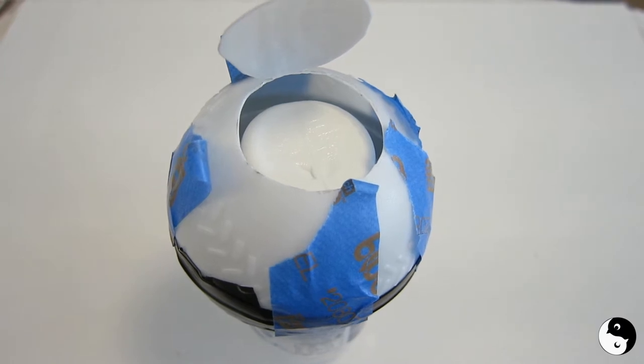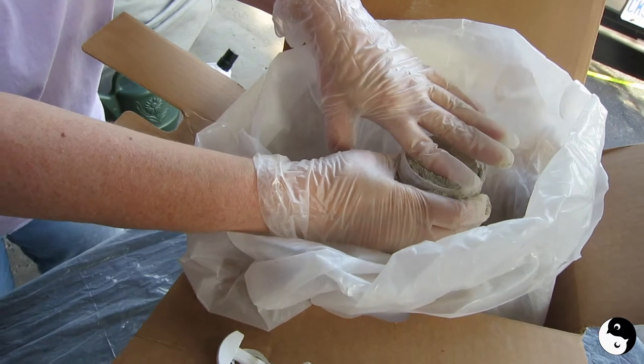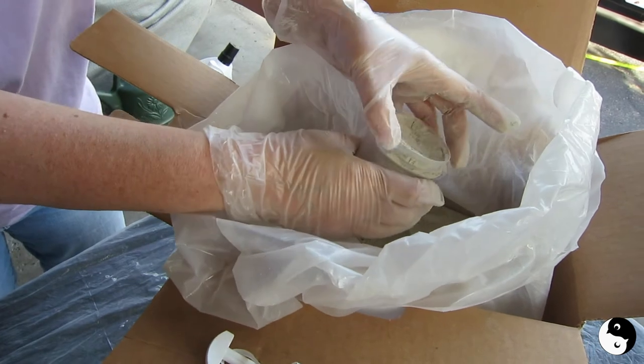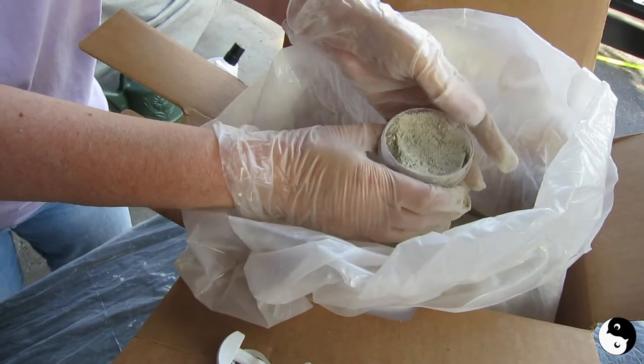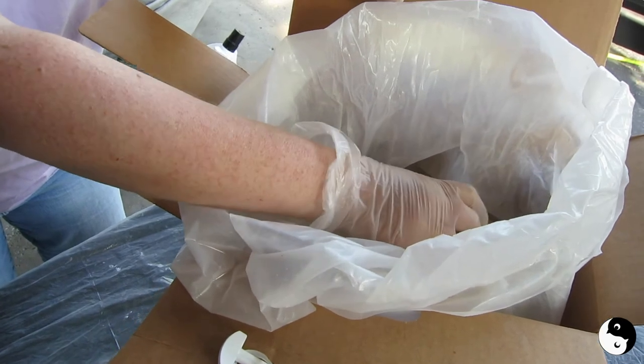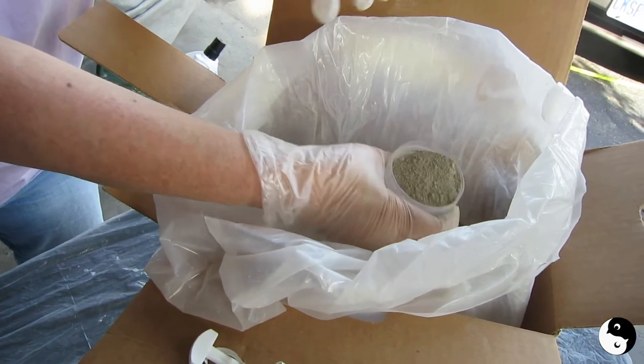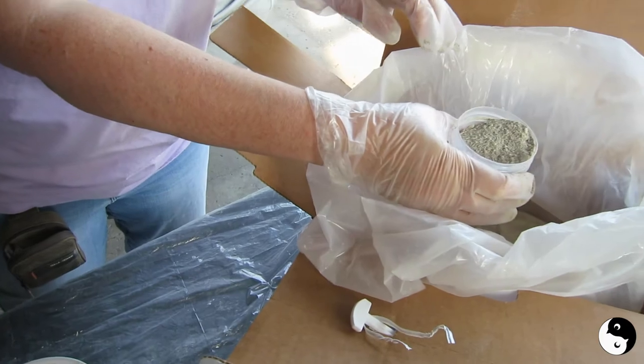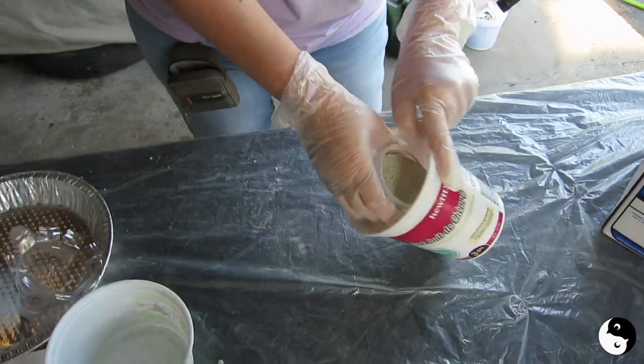Okay guys, we're back for take three and I know my quantities because I've had two prior takes. So there's going to be eight ounces of powder to two ounces of water. So I'm just going to get my powder into my bucket here.